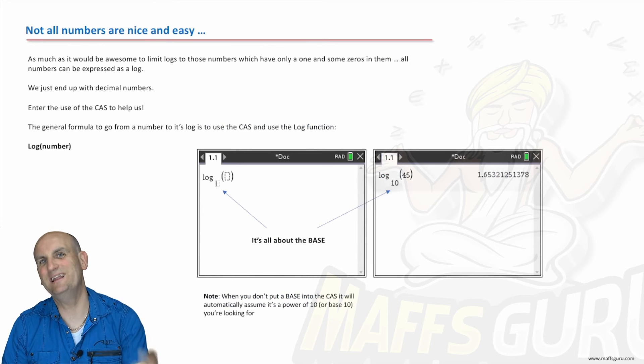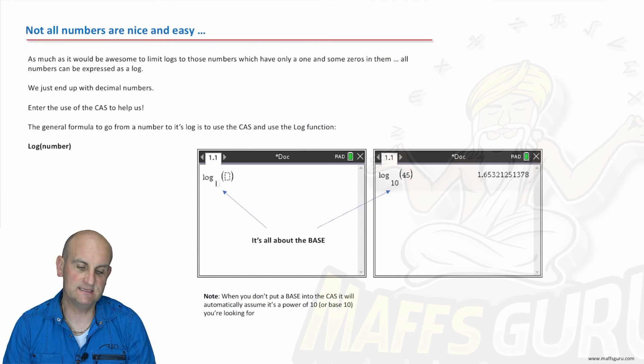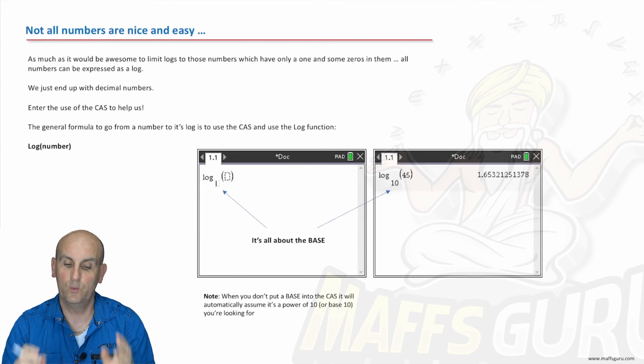Sadly, not all numbers are nice and easy. As I say here, as much as we would love to deal with just 10 and 100 and 1,000 and a million and all that type of stuff, we don't. We can deal with other numbers as well. Now the great news is that when that happens, we can use our CAS. And how do we do it? Well, you basically just type log of the number.